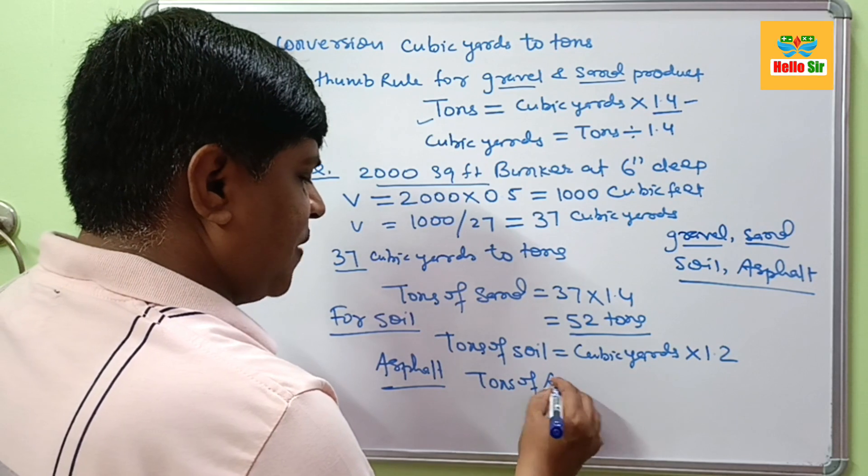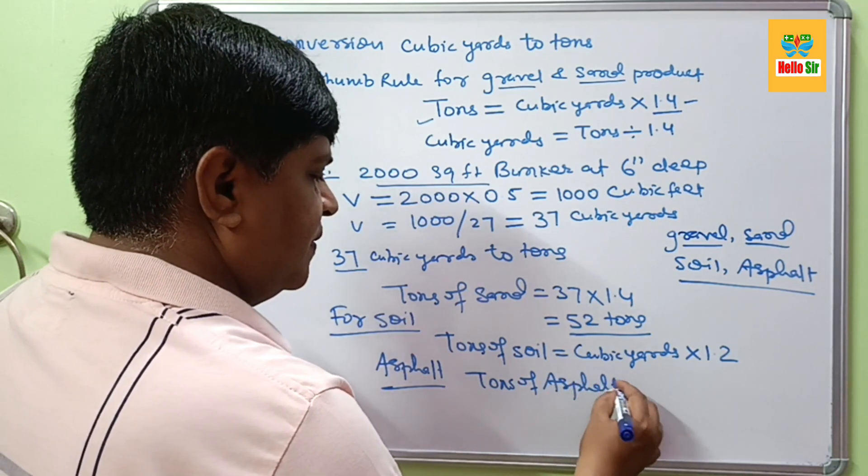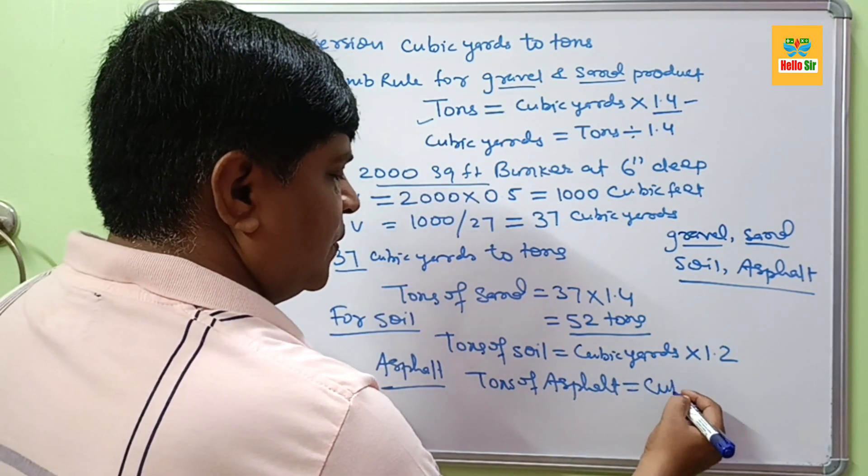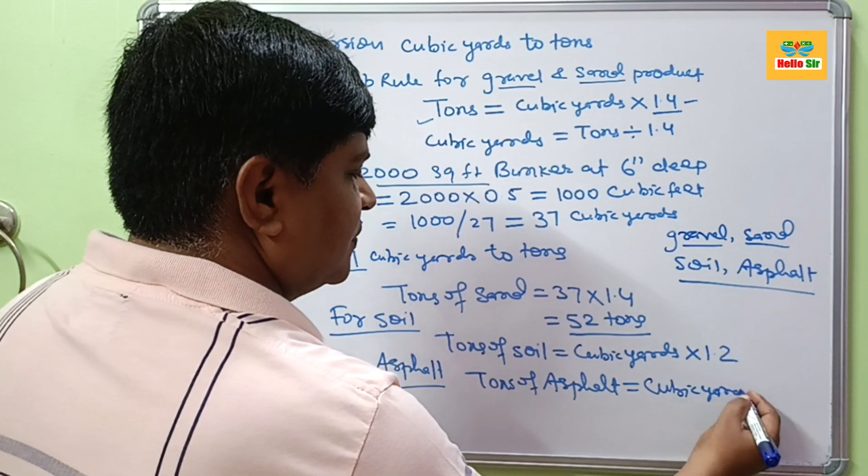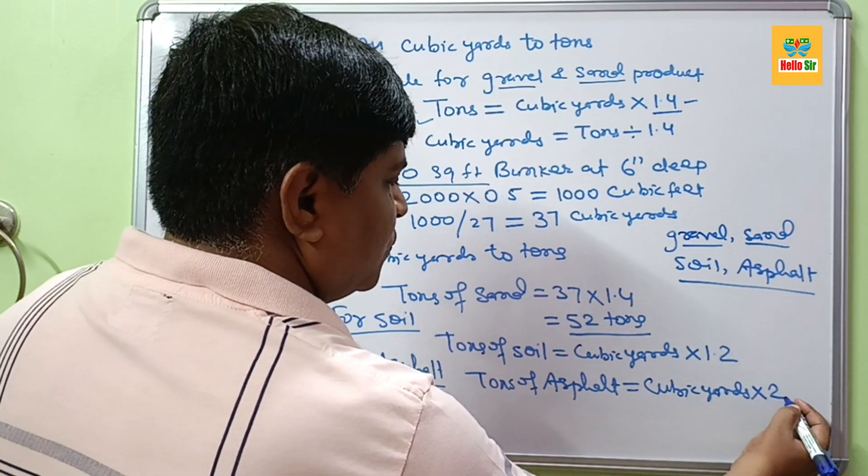And for asphalt material, tons of asphalt you need is equal to cubic yards into 2.